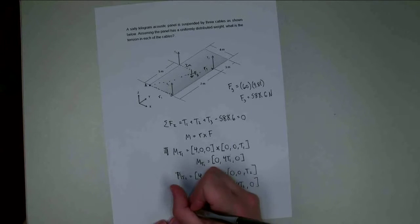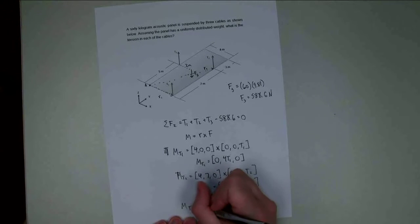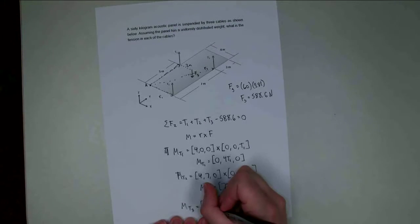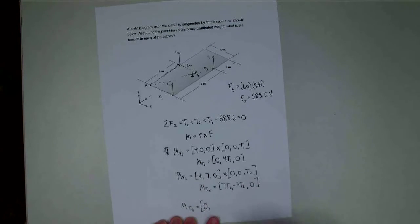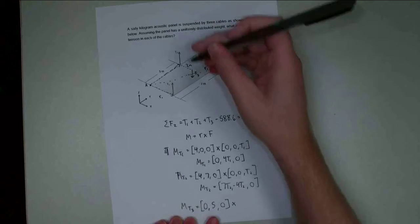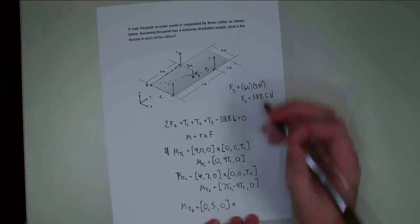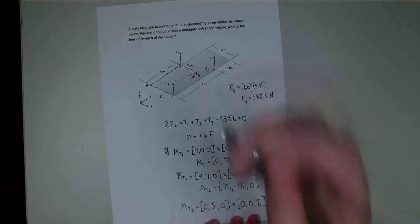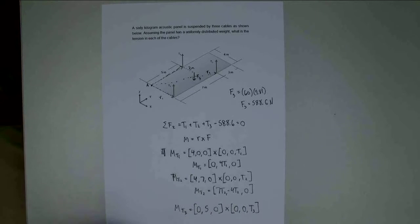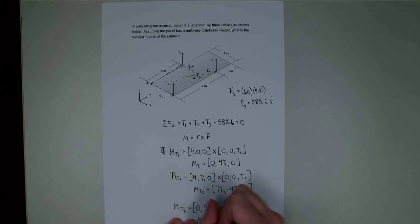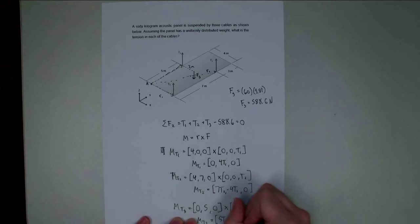For the moment due to T3, the R vector goes out to the T3 attachment point: zero in the x direction, five meters in the y direction, and zero meters in the z direction. The force vector is (0, 0, T3), pointing in the z direction. So MT3 is equal to (5T3, 0, 0).